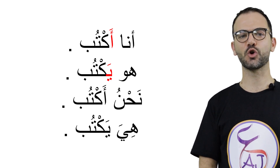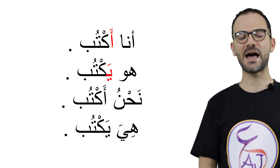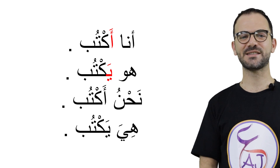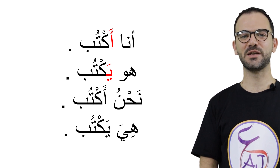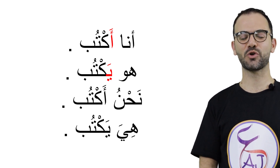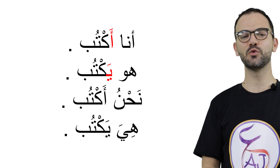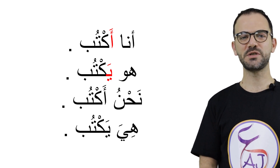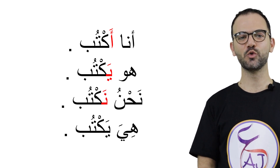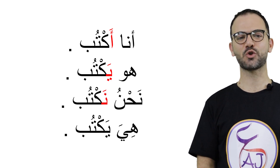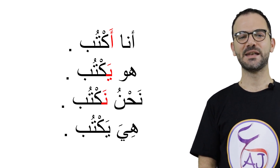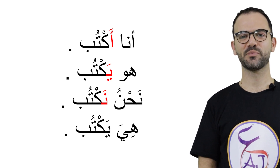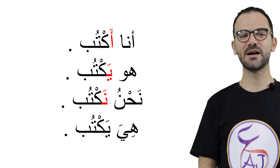نحن أكتب — the mistake is the letter ألف at the beginning of the verb, because with the pronoun 'we' — نحن — we use نـ: نحن نكتب. هي يكتب — the mistake is the letter يـ; with هي we use تـ: هي تكتب.